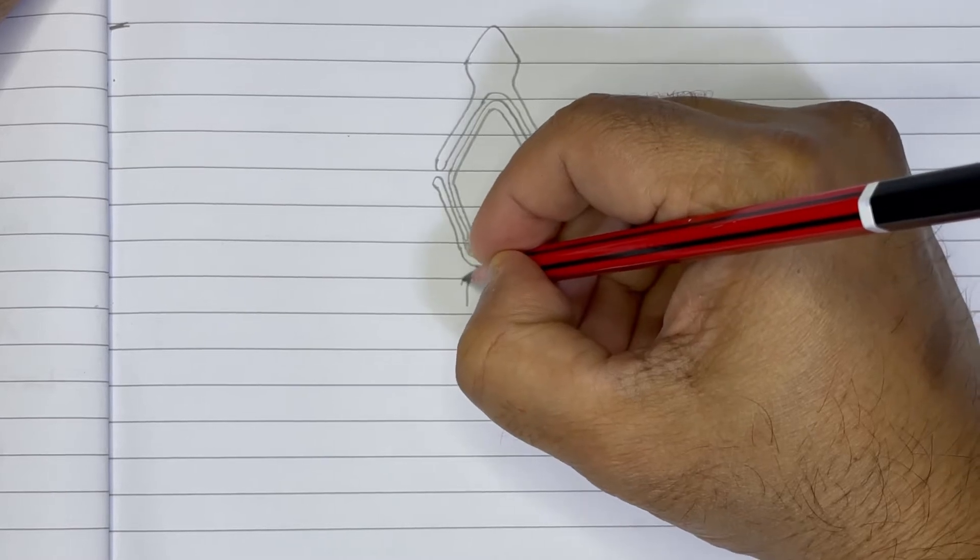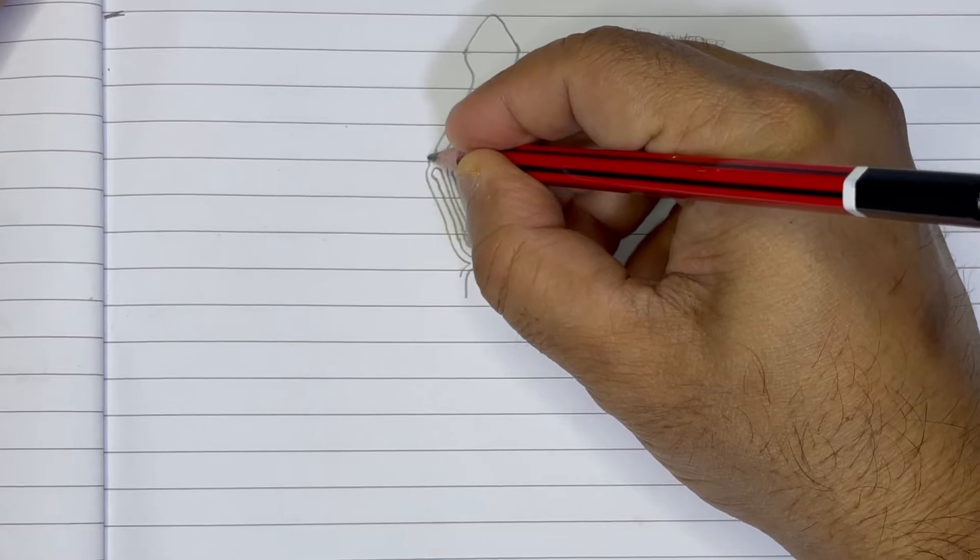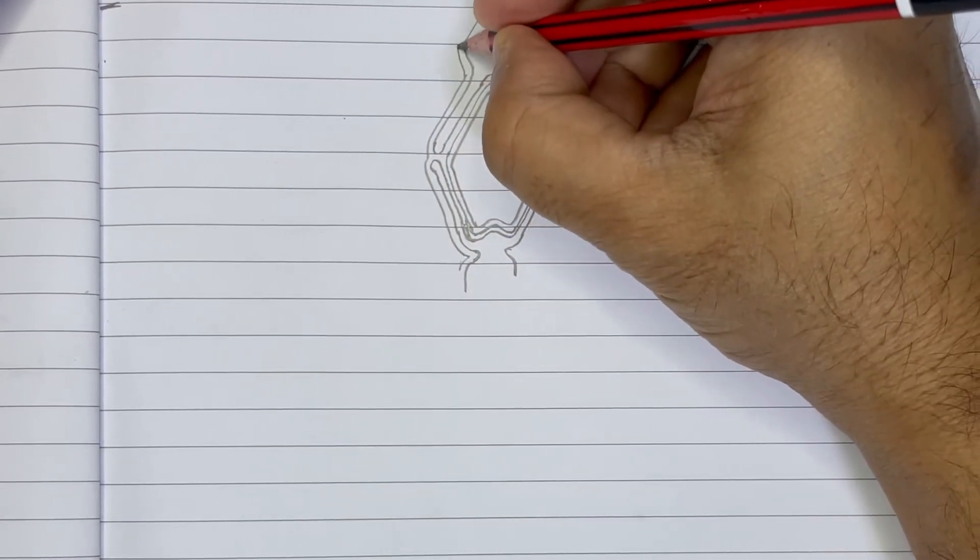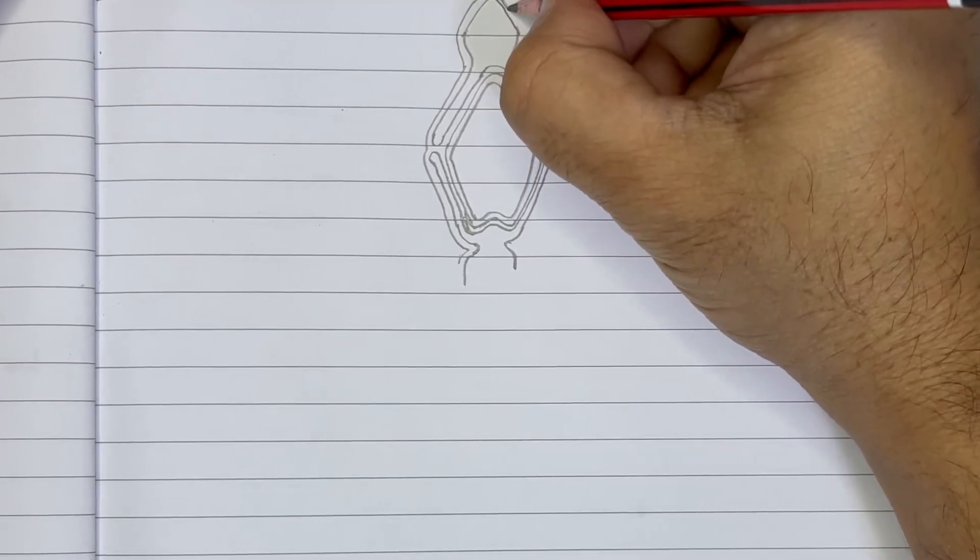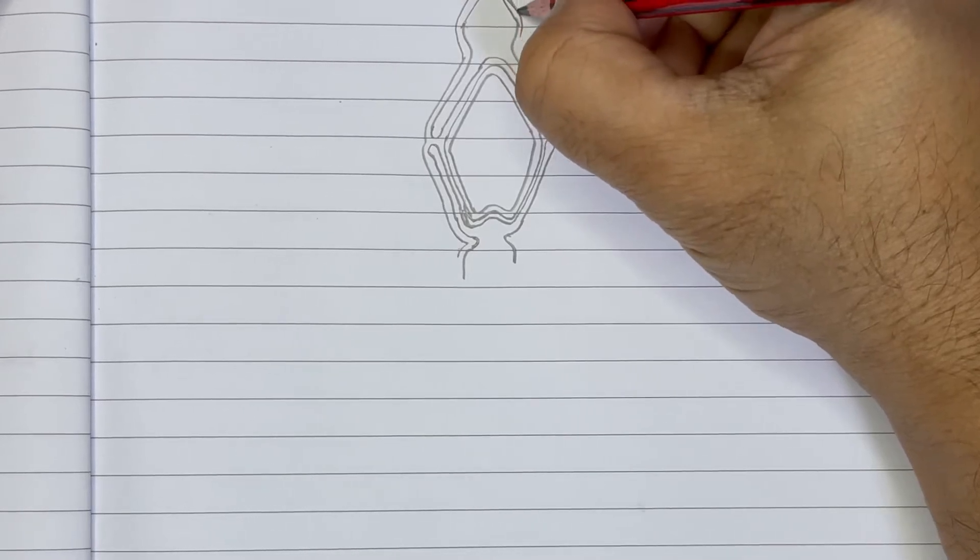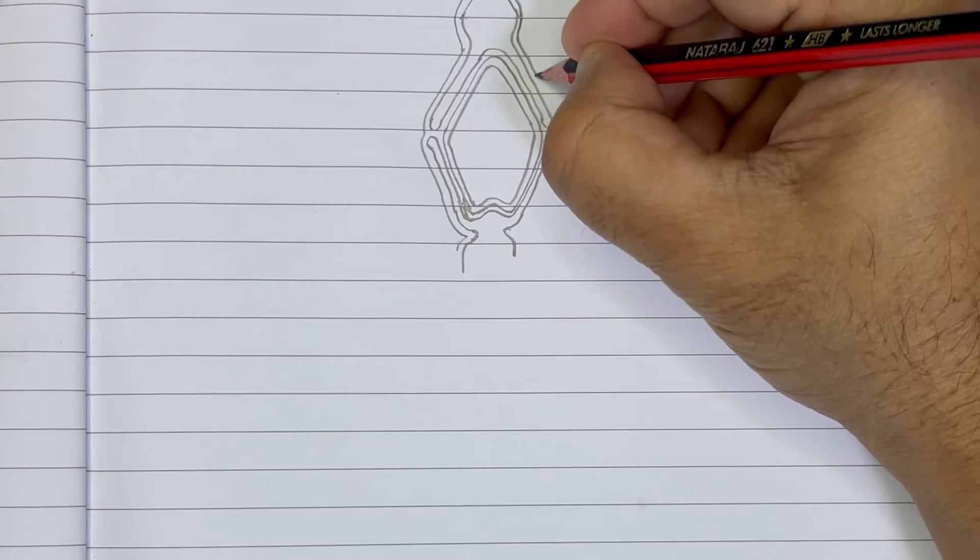For that, let's start from here again from the notch. Let's go all the way, then cover from the other side. Let's be a little north with the color, then all the way going like this.